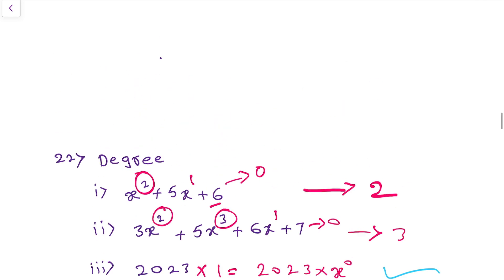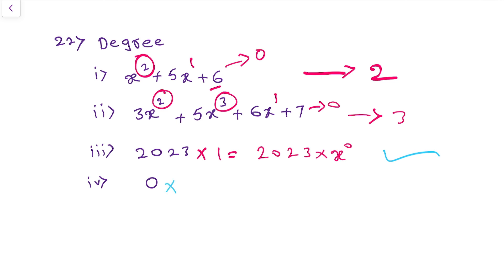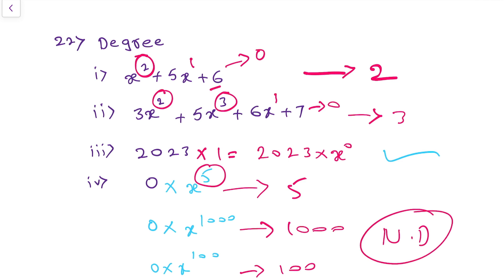What about the number 0 itself? In the previous question, I said 0 is also a polynomial. If it is a polynomial, does it have a degree? 0 into any number is 0, so I can write it as 0 into x power 5, or 0 into x power 100, or 0 into x power 1000. So 0 can be written with infinitely many degrees. That is the reason the degree of 0 is not defined. Degree of any constant is 0; degree of 0 is not defined.